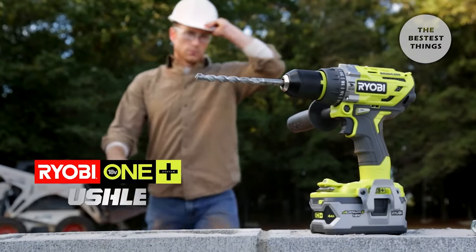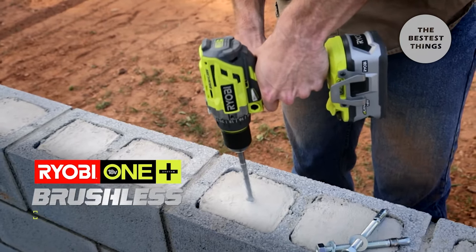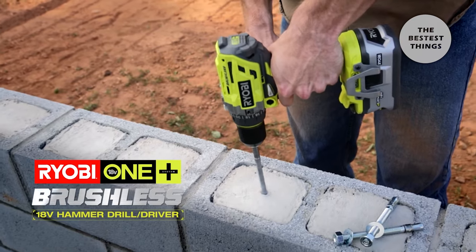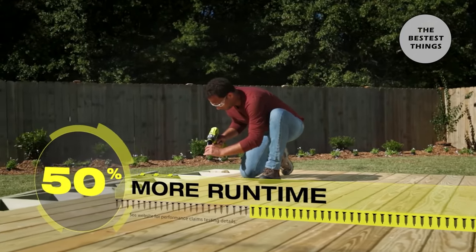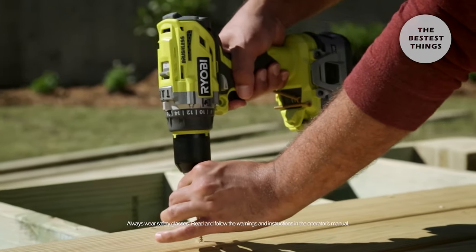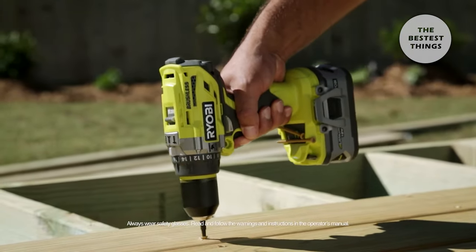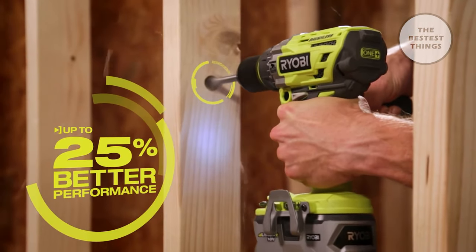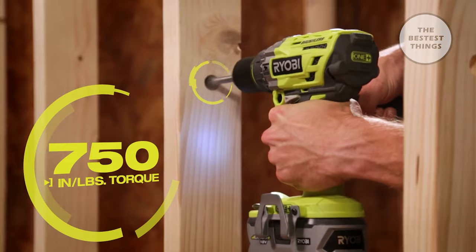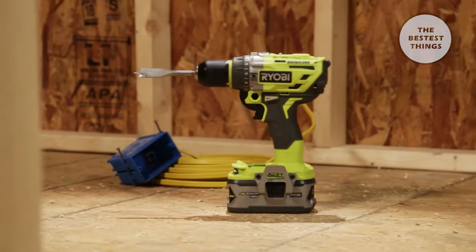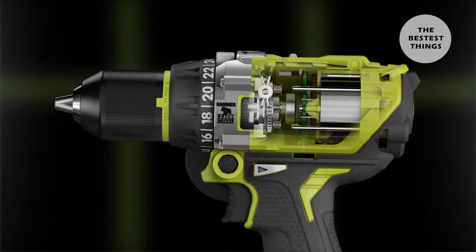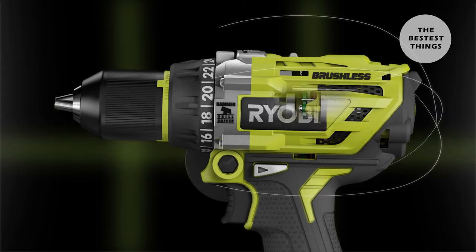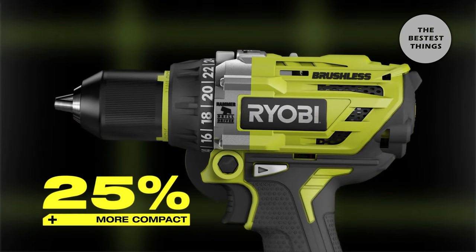Ready to go brushless? Introducing the new Ryobi OnePlus 18-volt brushless hammer drill driver. Get up to 50% more run-time from the energy-efficient brushless motor. And up to 25% better performance, delivering 750-inch pounds of torque. Brushless motors use less wearable parts, extending the tool life and making the drill 25% more compact.